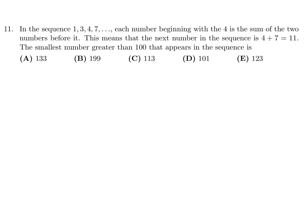The smallest number greater than 100 that appears in the sequence is 1, 3, 4, 7. So we've got to add them together to get the next number. So the next number would be 4 plus 7, which is 11, and then 11 plus 7, which is 18, 18 plus 11 is 29, 29 plus 18 is 47, 47 plus 29 is 76, 76 plus 47 is 123. So this is the first number that is greater than 100, and therefore that is the answer. So number 11 would be E.